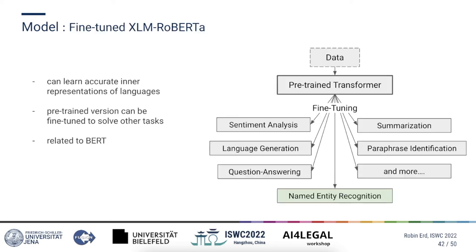The other model we decided to use is a transformer model. In contrast to regular recurrent neural networks, transformer models process input sequences all at once. Transformers can be pre-trained on large amounts of data to develop an accurate inner representation of one or multiple languages. Such a pre-trained transformer-based language model can then be fine-tuned relatively easily to solve other tasks like sentiment analysis, question answering, and named entity recognition. The chosen transformer, XLM-RoBERTa, is similar to the well-known BERT transformer. I will refer to this model as the XLMR model.